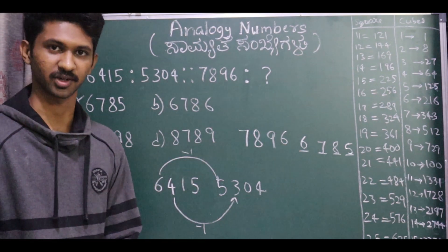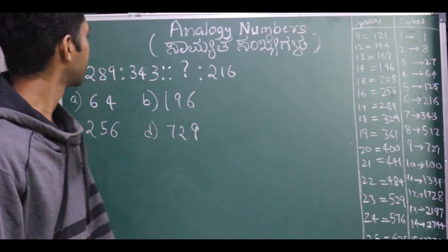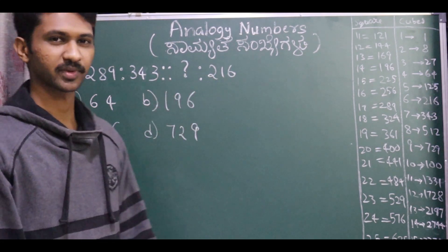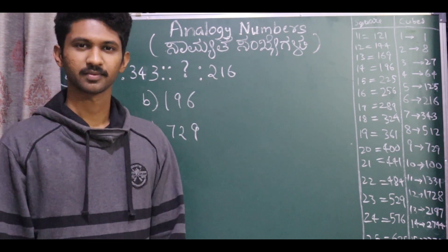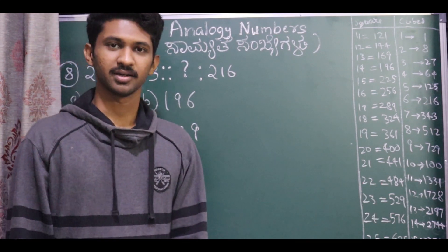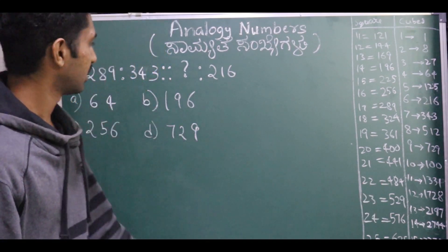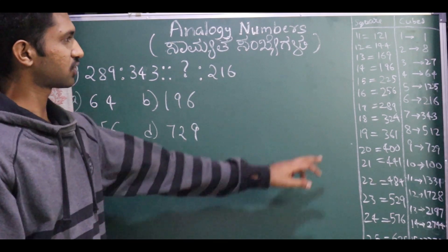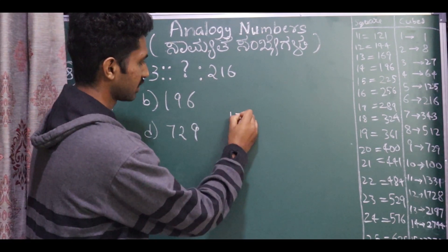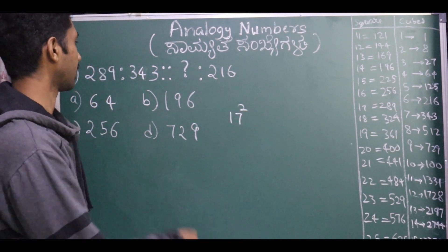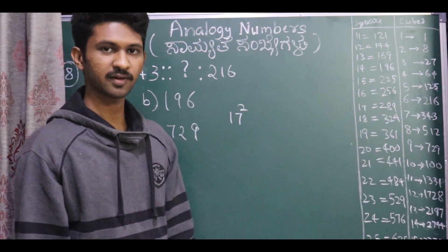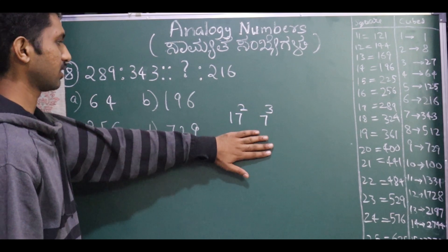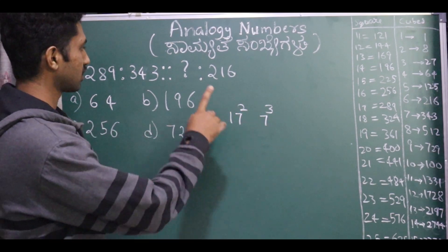The next question has 289, 343, and question mark, and 216. As I said at the beginning, if you remember squares and cubes perfectly you can solve this. 289 is the perfect square of 17, and 343 is the perfect cube of 7. So the pattern is: one number squared, one number cubed.